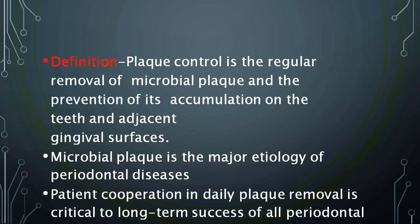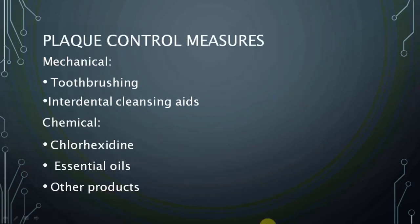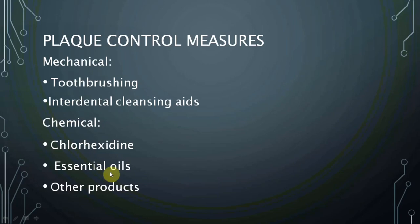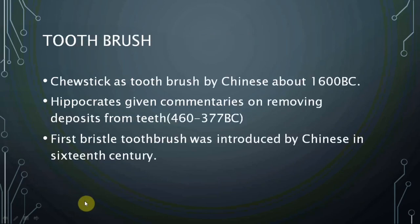Microbial plaque is a major etiology of periodontal diseases, but patient cooperation is a fundamental key for long-term success. We have mechanical and chemical plaque control measures. In mechanical, the most common are toothbrushes and interdental cleaning aids. In chemical, it is chlorhexidine, essential oils, and a few other products.